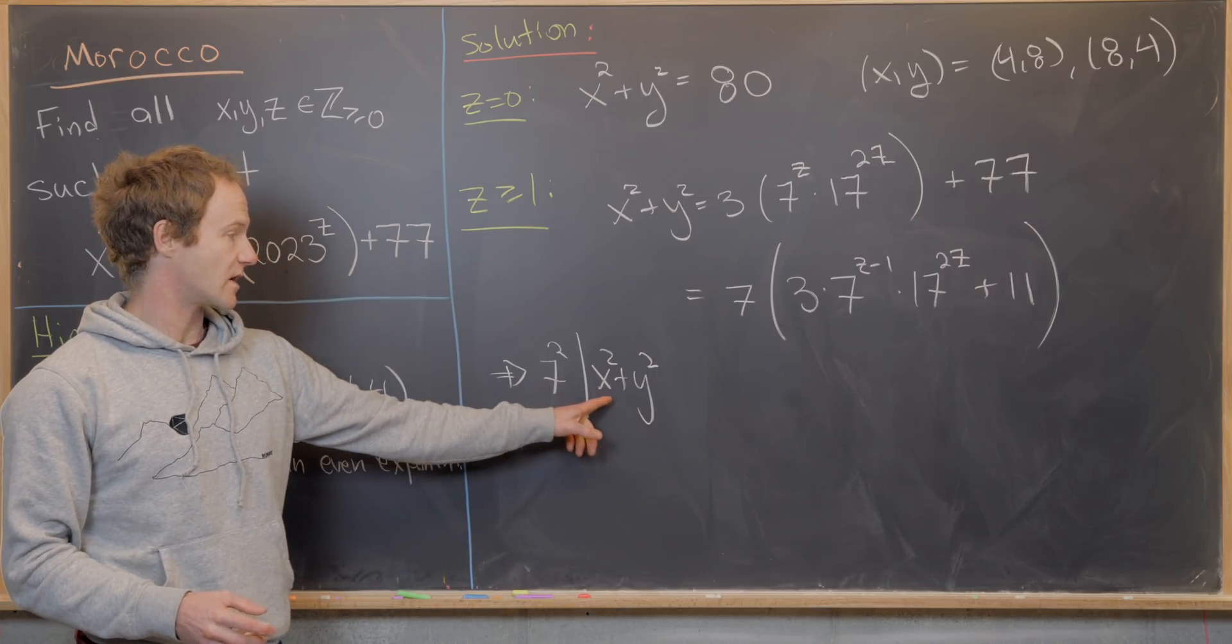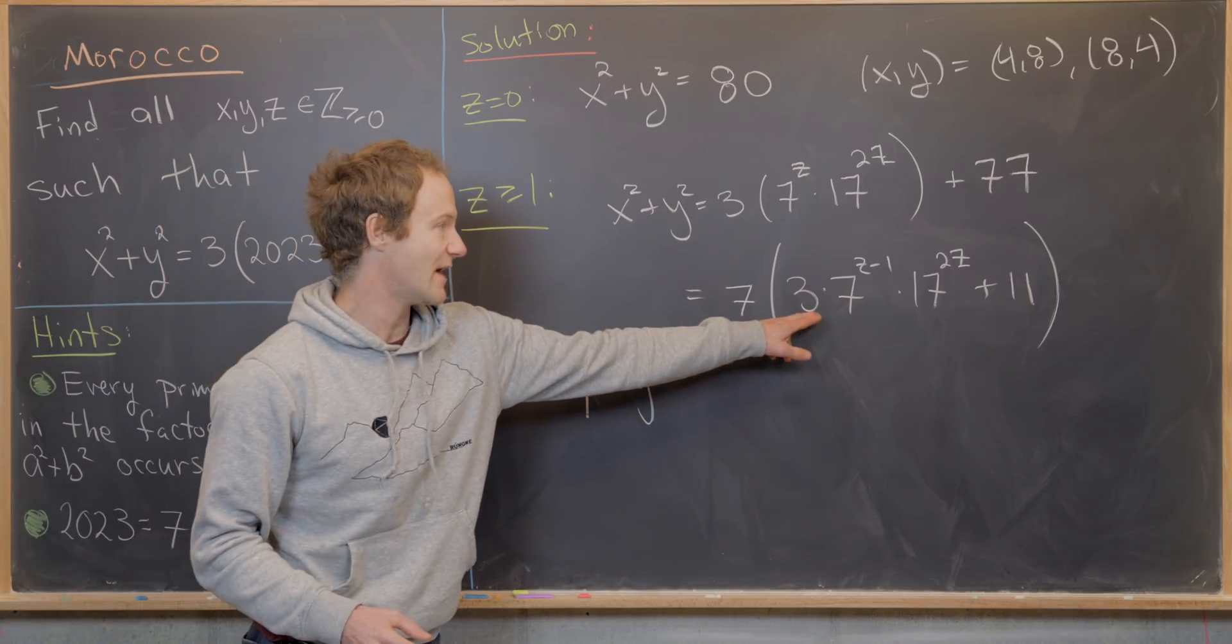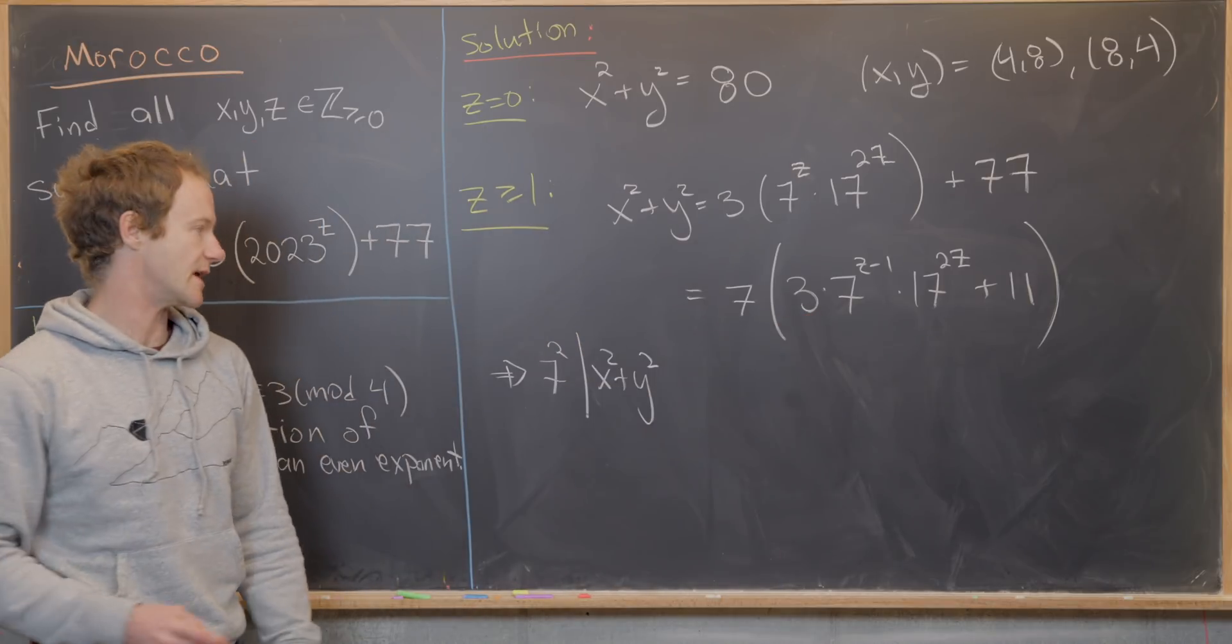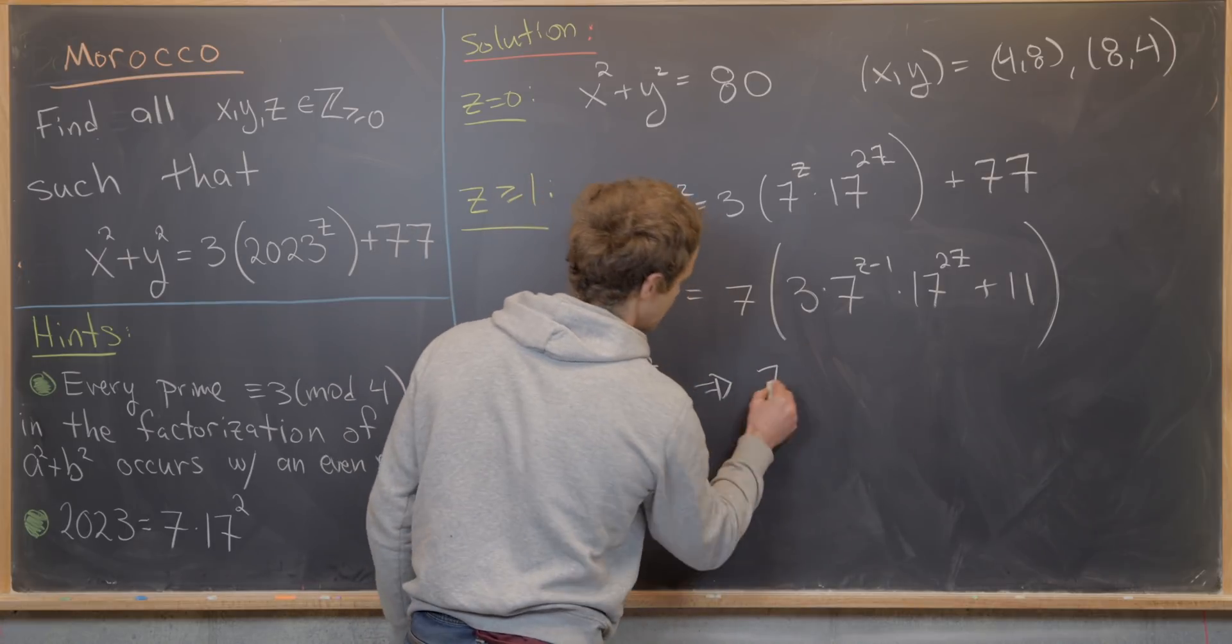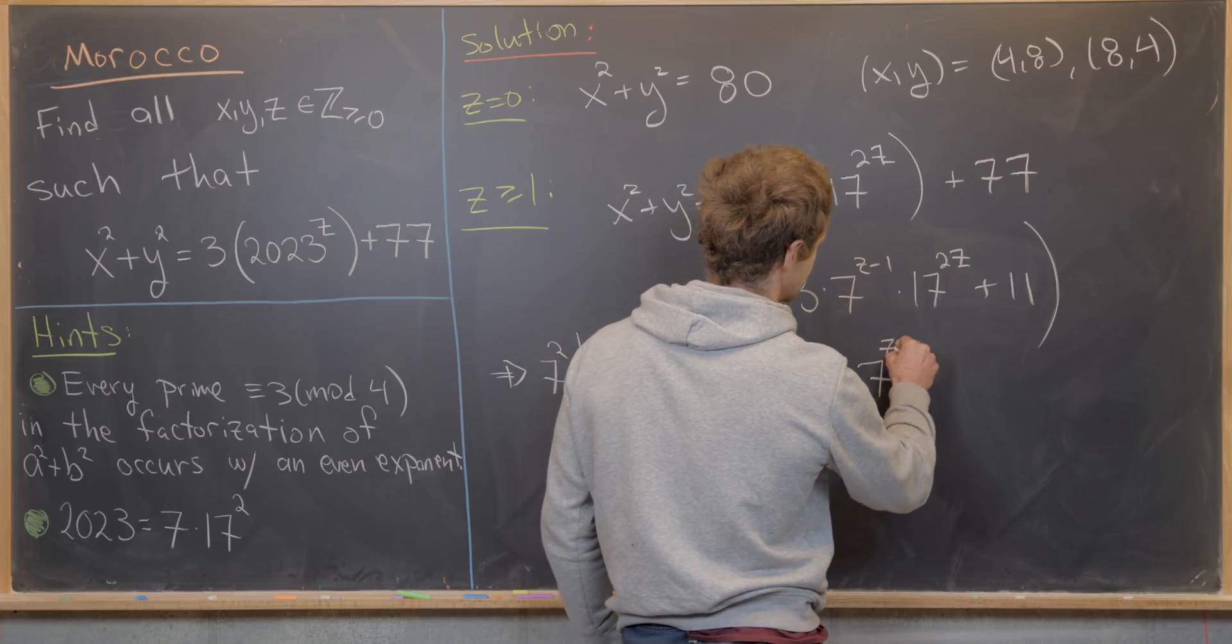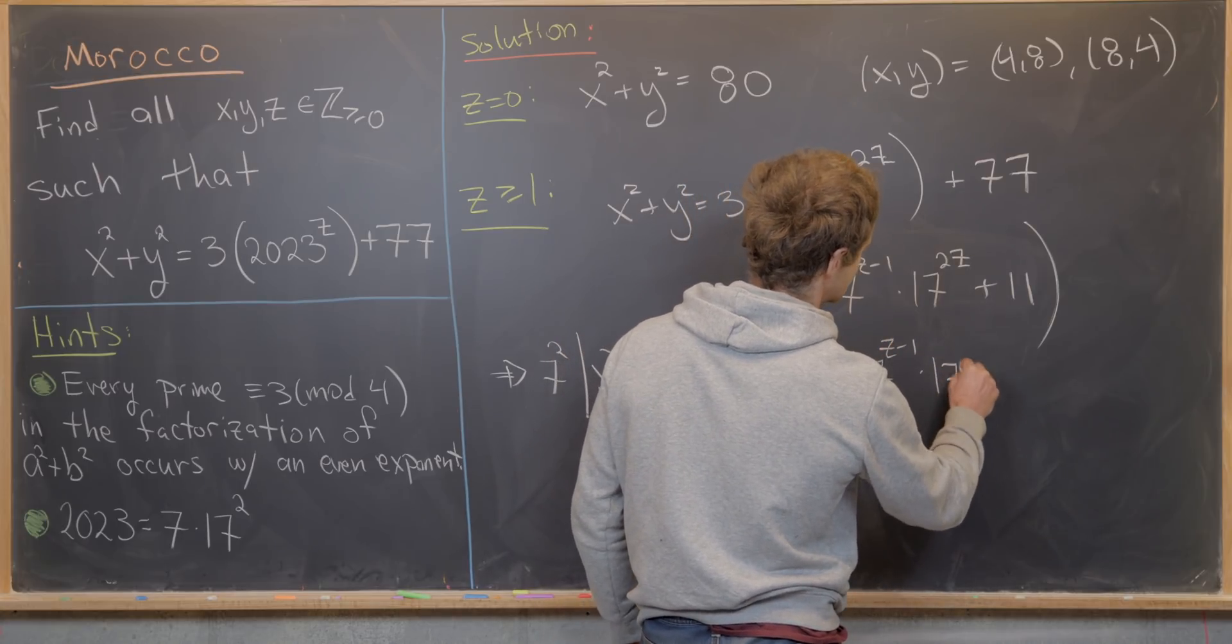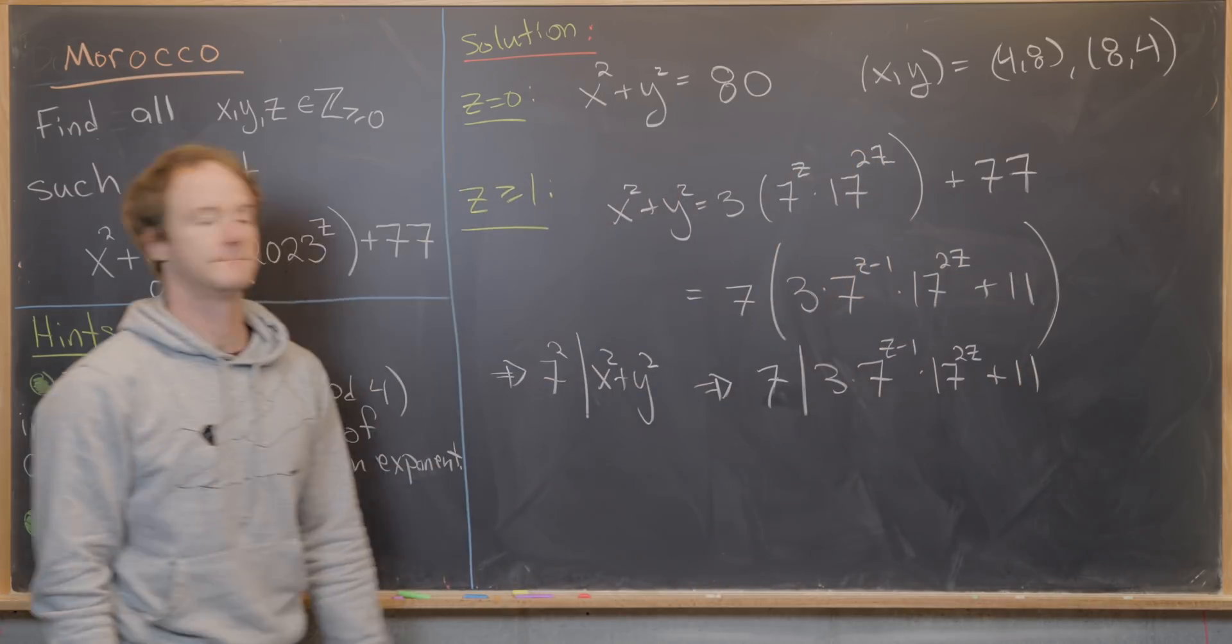But if 7 squared divides x squared plus y squared, then that means 7 has to divide this one right here. So that tells us again that 7 divides 3 times 7 to the z minus 1 times 17 to the 2z plus 11.